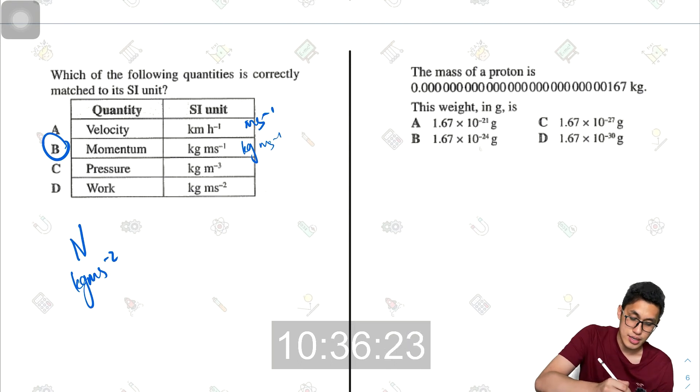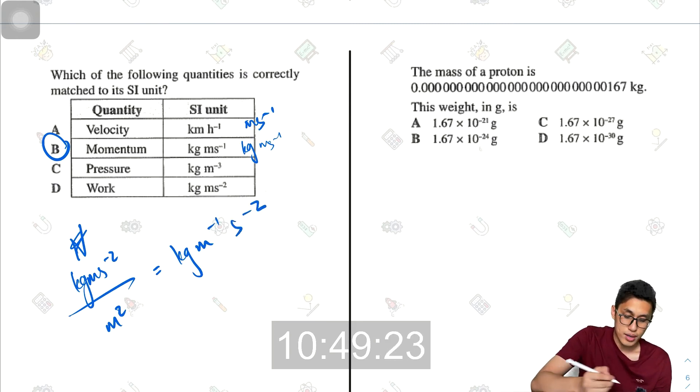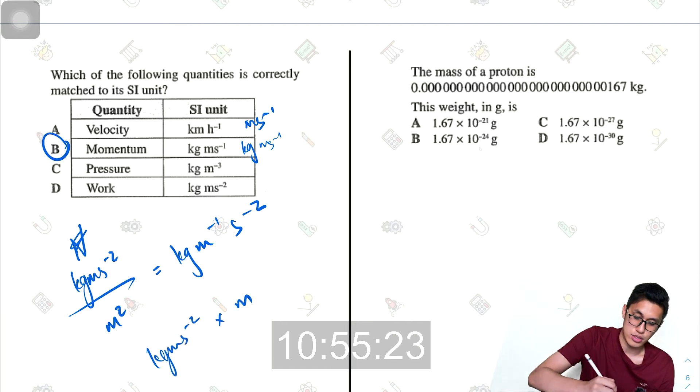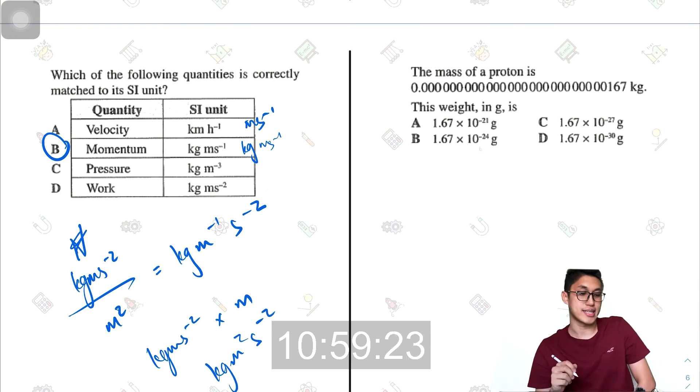Pressure is force divided by area. So divide by area, that's meters squared. So you should get kg m negative 1 s negative 2. And work would be force times distance. So force times distance. So it should be kg meters squared per second squared.